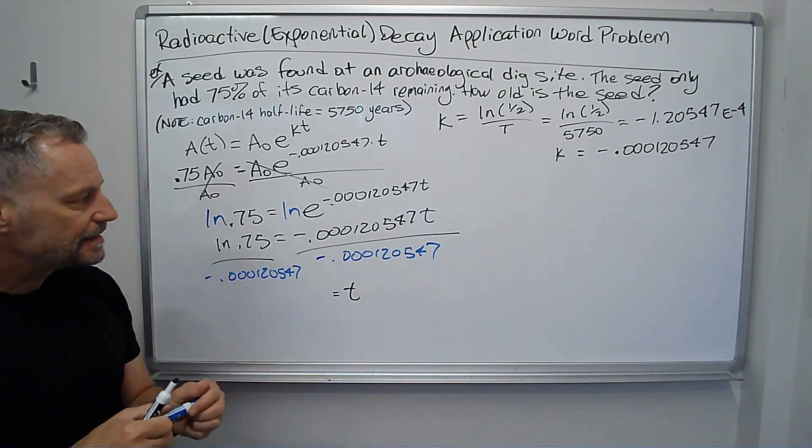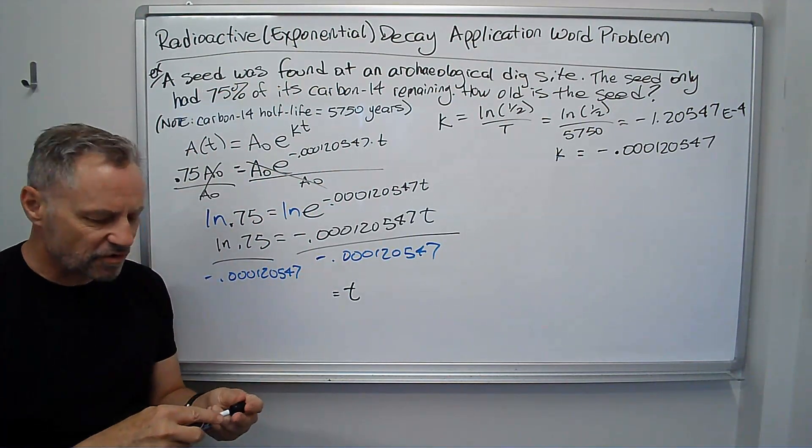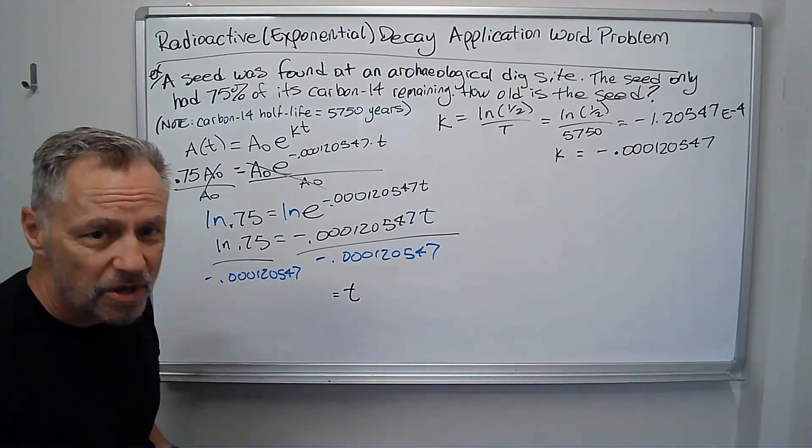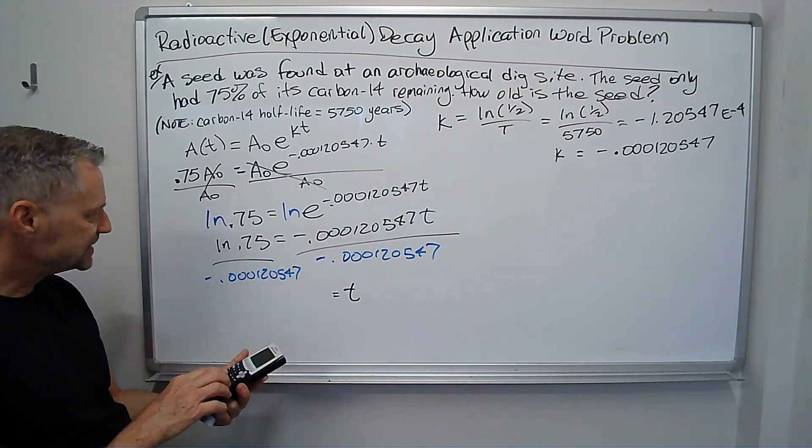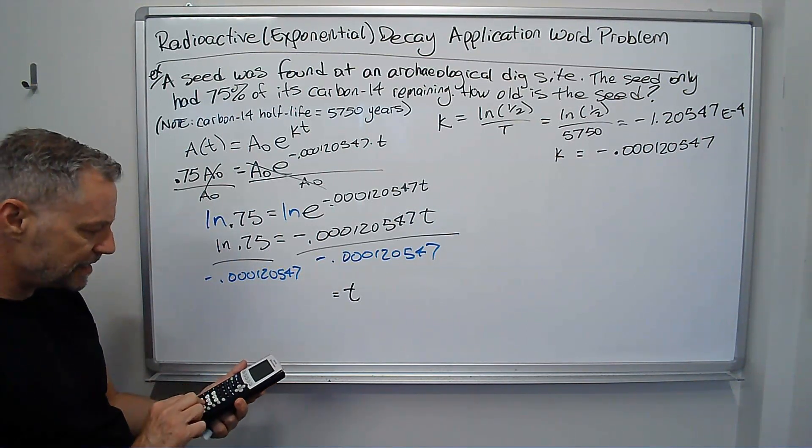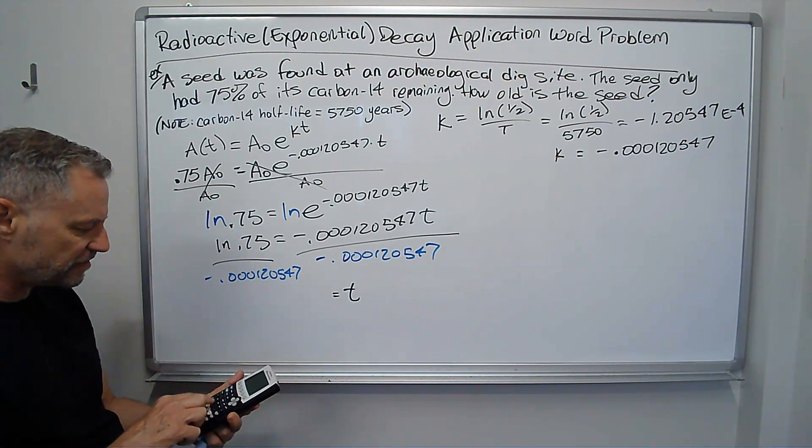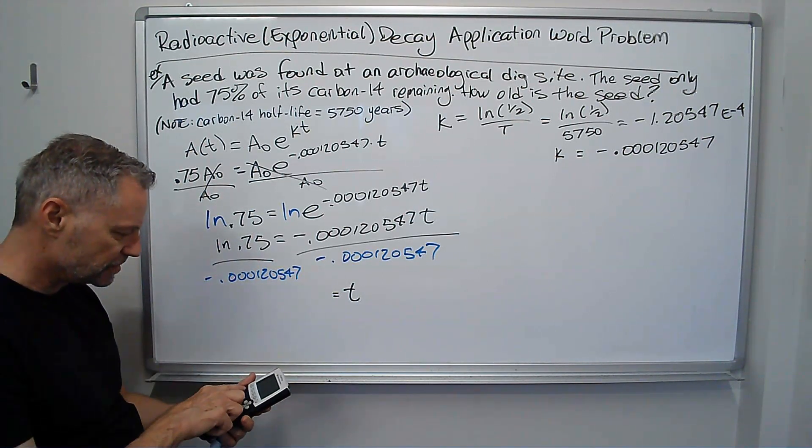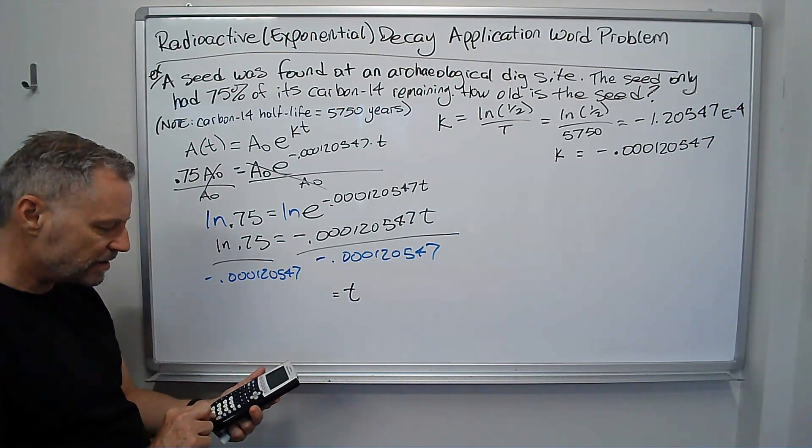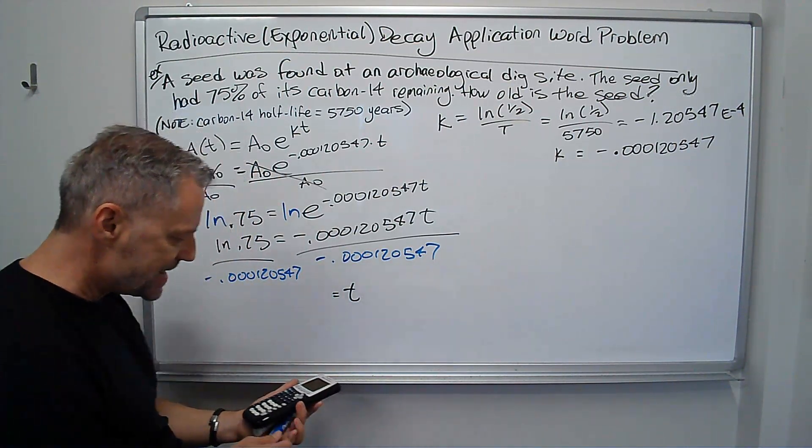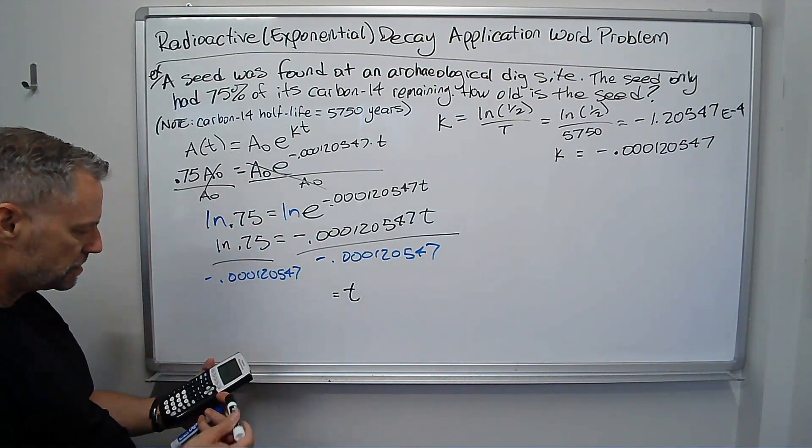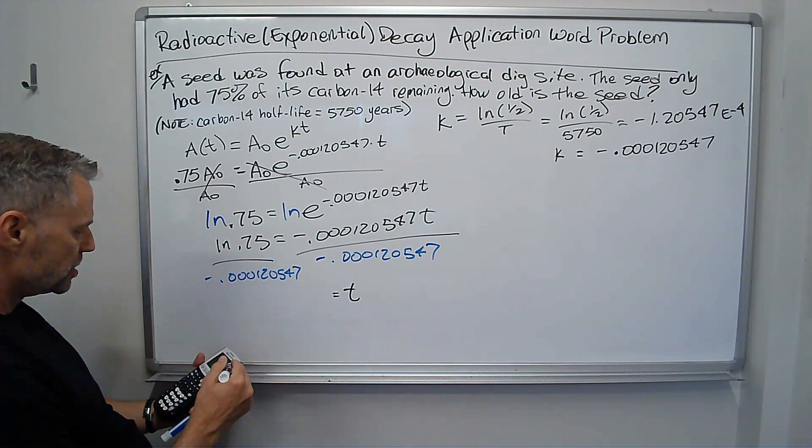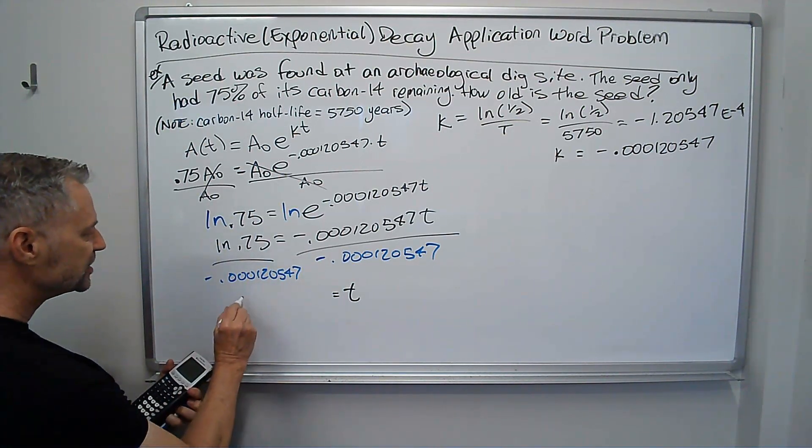t equals. Now since I've carried that decimal so far, I'm just going to use that decimal. We'll use what I have in here to see if there's a difference. If I go ln 0.75, close parentheses, divided by my answer, so now I haven't rounded at all, I get about, rounded to the nearest year, 2,386 years.